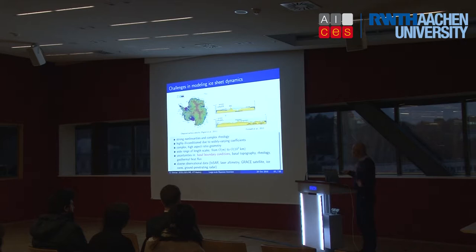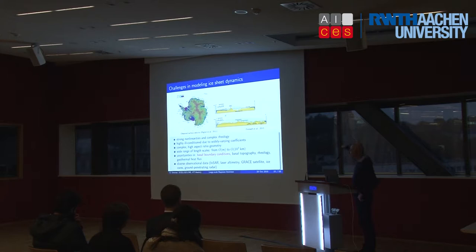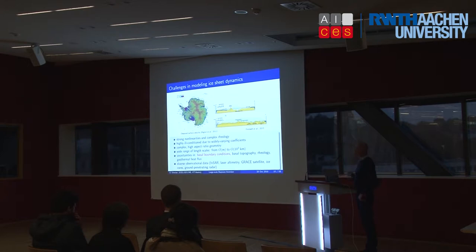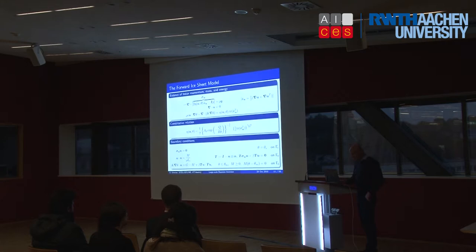Fortunately there is a diverse set of observational data. Interferometric synthetic aperture radar gives us the velocity on the surface — that's what the animation you saw was from. Altimetry gives us the height of the ice sheet. The GRACE satellite tells us about changes in mass. There is ground-penetrating radar which illuminates the base. And critically, ice cores — very few and far between in Antarctica — can tell us something about the temperature distribution.